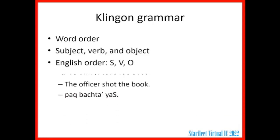In Klingon, this is "paq bach yaS." Paq is book — that's the object, so it comes first. Bach is the verb — that's what's happening. And yaS is the subject — that's the officer. So the Klingon order is the opposite of English: it's object, verb, subject.